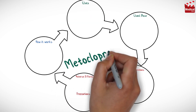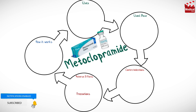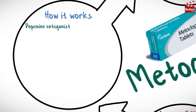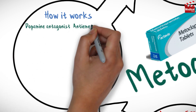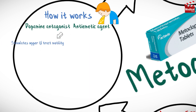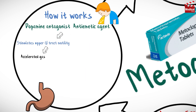In this video we'll briefly discuss what metoclopramide is, how it works, what it's used for, the dose and side effects, contraindications and precautions. Metoclopramide is a dopamine antagonist anti-emetic agent. It stimulates upper gastrointestinal tract motility, resulting in accelerated gastric emptying and intestinal transit.